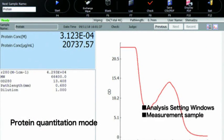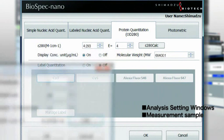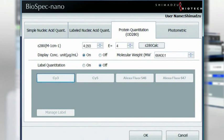And, of course, the BioSpec Nano has a protein quantitation mode. Protein concentration is calculated from the peak optical density at 280 nanometers. In addition, for labeled proteins, the label concentration and labeling ratio can be determined.